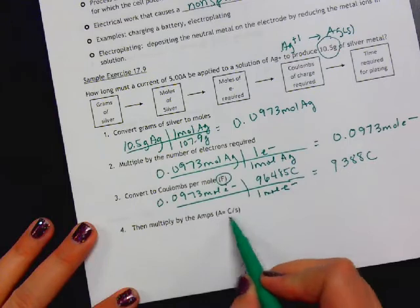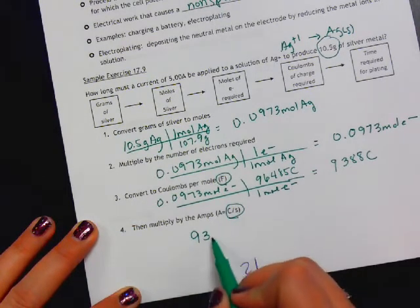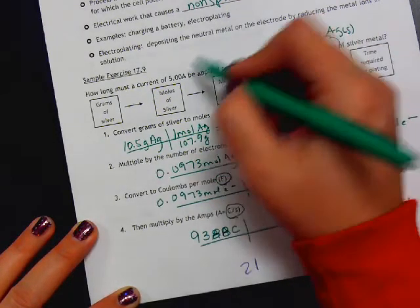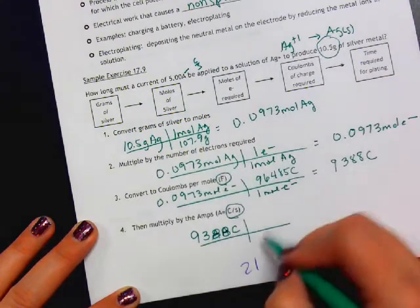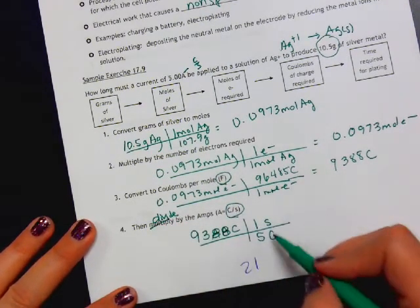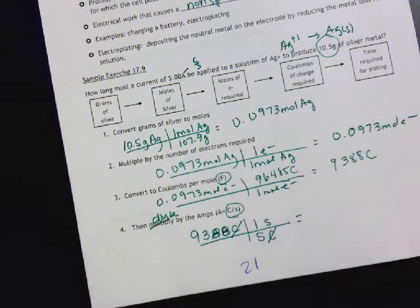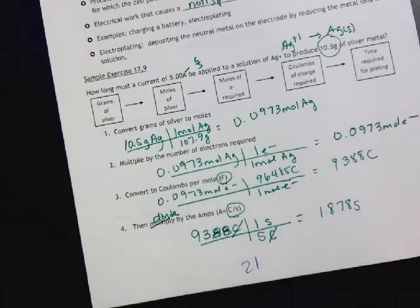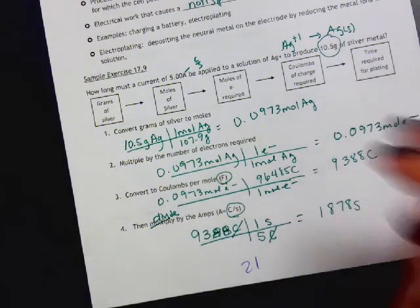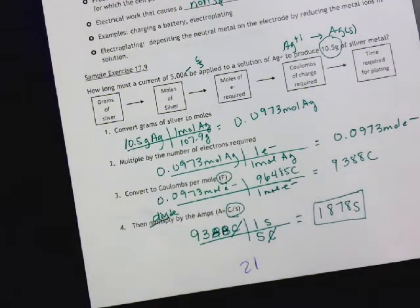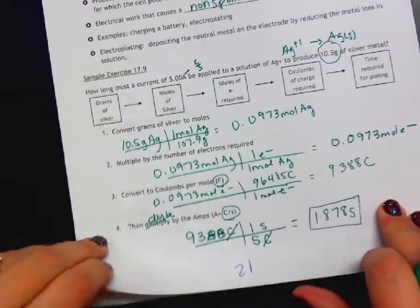Then we multiply by the amps, which is a coulomb per second. We have 9,388 coulombs. Our amps, remember, is the same as a coulomb per second. That means we have 5 coulombs for every 1 second. We would divide to get to time. Our coulombs would cancel, and we would divide and get our time, which is 1,878 seconds. Of course, if they asked for it in minutes, we could convert that to minutes by dividing by 60 seconds per minute.